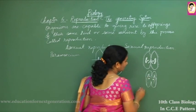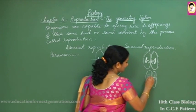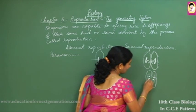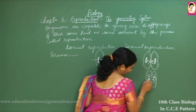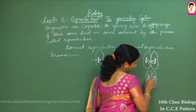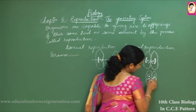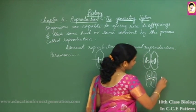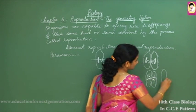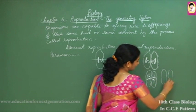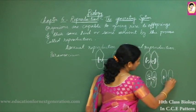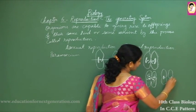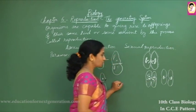One micronucleus undergoes division and forms four nuclei; three will degenerate and only one is left. This one divides again and forms two nuclei — one behaves like male and one like female. The stationary nuclei are female; the male nuclei migrate and exchange of genetic material takes place, completing the sexual mode of reproduction.